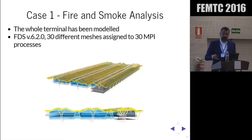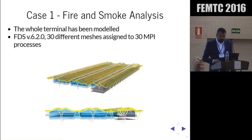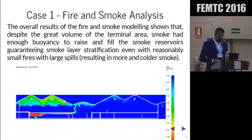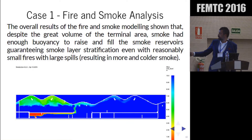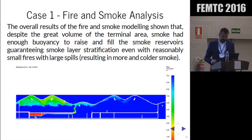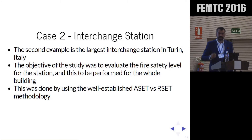We also did fire and smoke modeling for the same terminal. We modeled the whole terminal — a massive model split into 30 different meshes, as you can see in the Smokeview picture of the FDS model. The overall result showed that despite the great volume of the terminal area, smoke had enough buoyancy to keep itself at the higher level, and it was safe for occupants to evacuate the building. This is just one picture of a quite complex project.